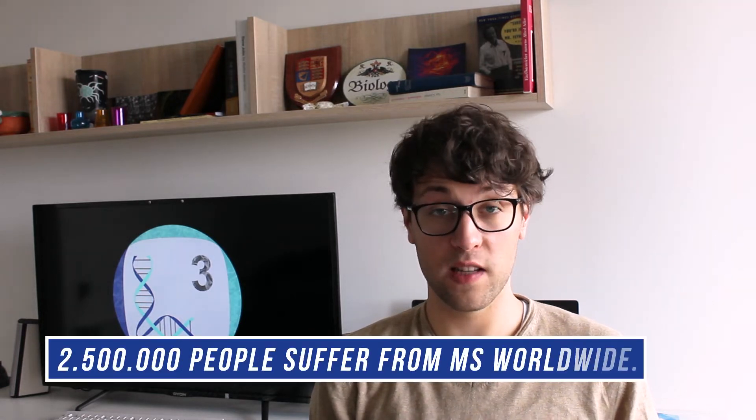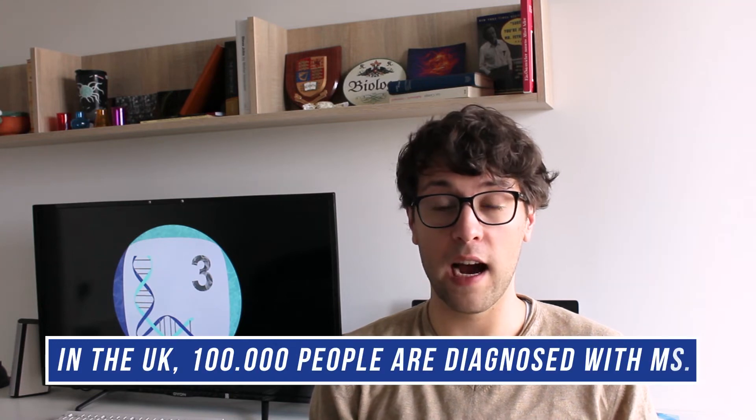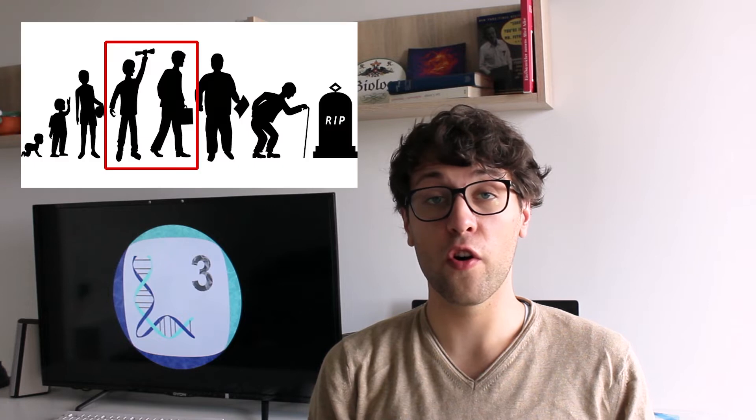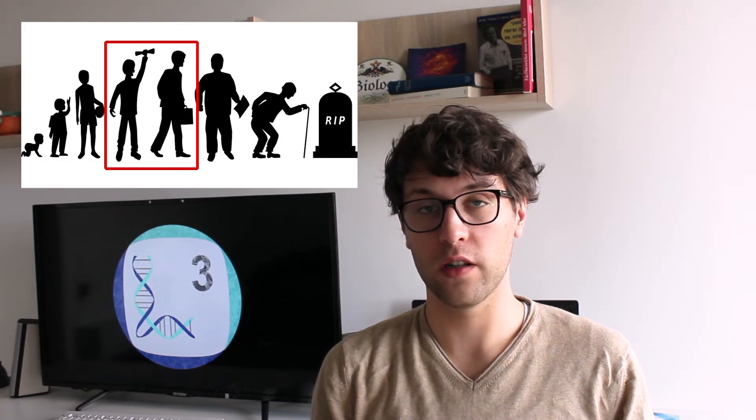Before we find out how multiple sclerosis affects the body let's talk about the disease on a larger scale. According to the multiple sclerosis trust over 2.5 million people in the world suffer from multiple sclerosis and in the UK alone over 100,000 people are diagnosed with this disease. The disease is mostly diagnosed during early adulthood between the ages of 20 and 40.